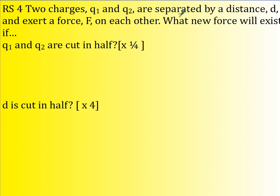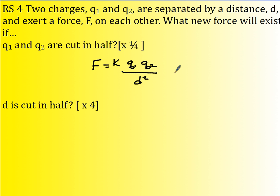Now, two charges are separated by a distance d and exert a force f. What new force will exist if the charges are cut in half? Write it out: f equals k q1 q2 divided by d squared. If q1 and q2 are both cut in half, you wind up with 1 half times 1 half, or 1 quarter the original force.